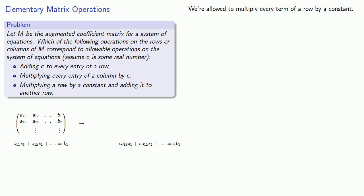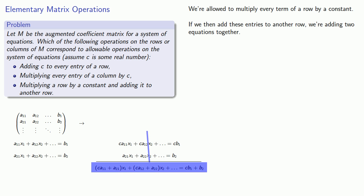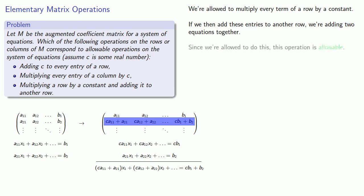If we then add these entries to another row, we're adding two equations together. And since we're allowed to do this, this operation is allowable.